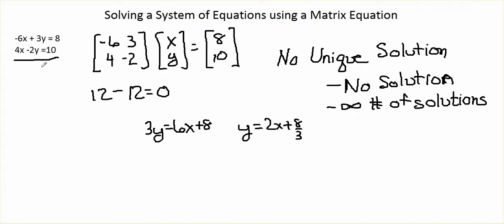In our second equation, we get negative 2y equals negative 4x plus 10. When we divide by negative 2, we get y equals 2x minus 5.